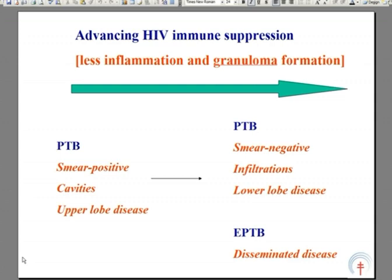Atypical presentations become more and more frequent. In all these situations, the diagnosis becomes more difficult, and TB becomes more and more likely to be missed. For example, in patients in Côte d'Ivoire dying with the so-called slim disease...